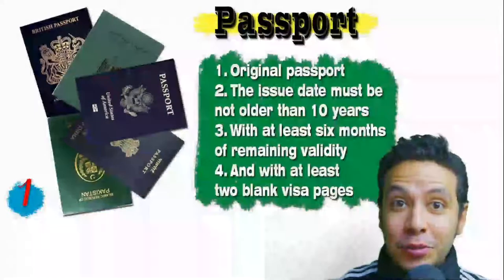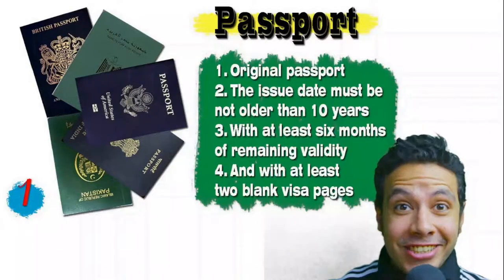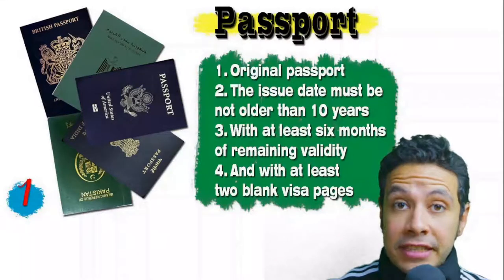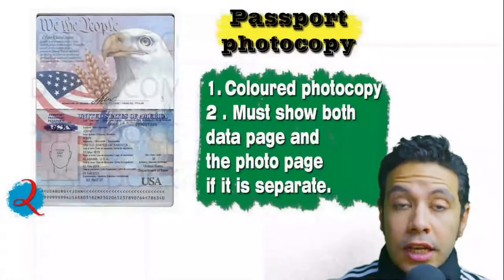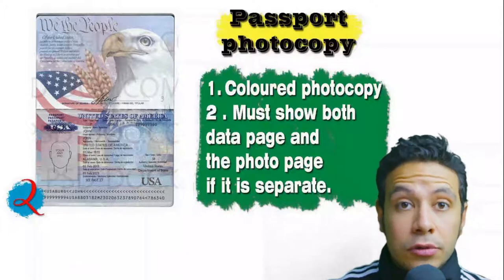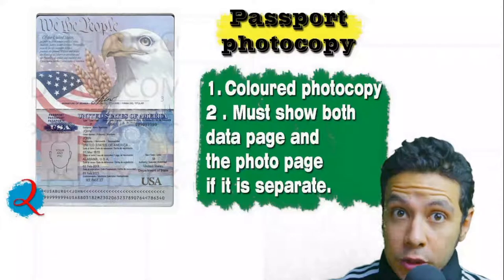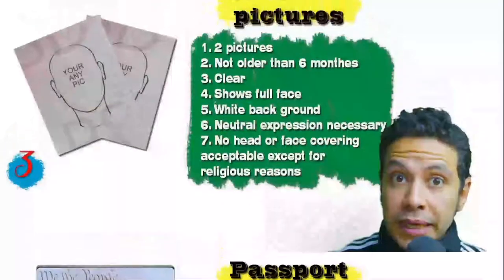Speaking about your passport: it must be original and must not be older than 10 years, with at least six months of remaining validity and at least two blank visa pages for stamps. In many cases you will also need a photocopy of your passport — it may be one copy or more, and it is preferred to be colored with both the data page and photo page showing. In some cases you might be required to photocopy every single page, but generally only the data page and photo page are needed.